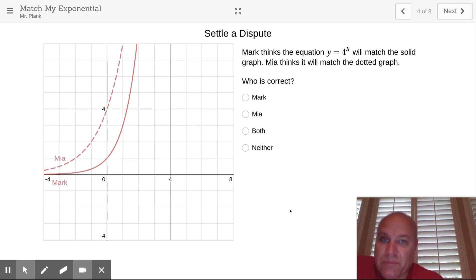Let's settle this dispute between Mark and Mia. So let's first think, if x is 0, y equals 4 to the 0, that means y equals 1. So that means Mia, she's up here at 0, 4. That's gone. Mark, it's looking all right. He's at 0, 1. That works.